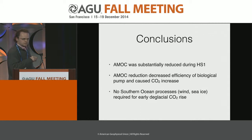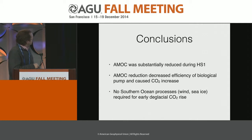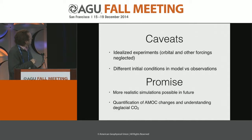Because of this overestimation, I cannot say that the AMOC was completely shut down as in the model. One explanation for the model-data mismatch would be that the AMOC was not completely shut down, or that the reduction was smaller — for example, if starting from weaker initial LGM conditions. In the model, the AMOC reduces the efficiency of the biological pump, and this causes CO2 to increase. As mentioned, there are no wind changes applied to the model, so we do not need any changes directly forced in the Southern Ocean to explain this early deglacial CO2 rise. These are idealized experiments — no orbital or other forcings are considered — and the different initial conditions is a caveat we need to consider.